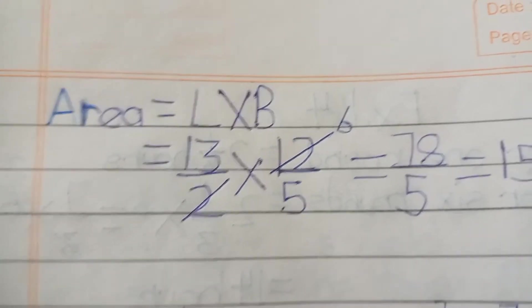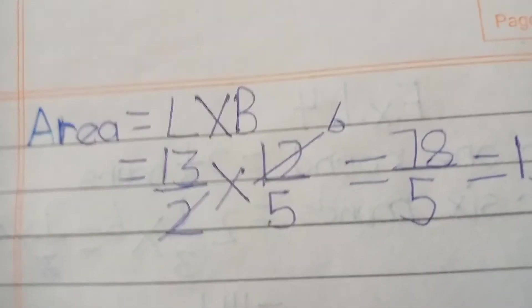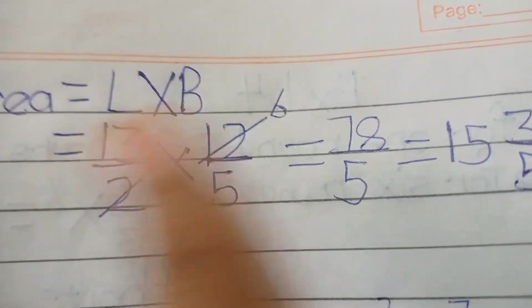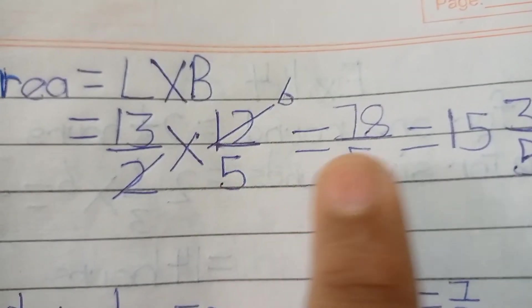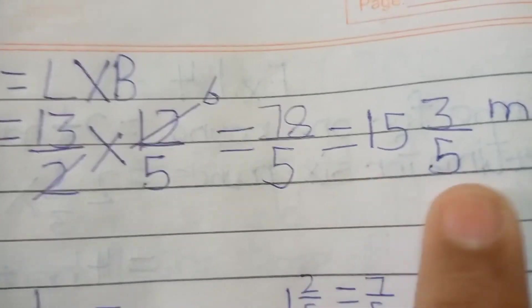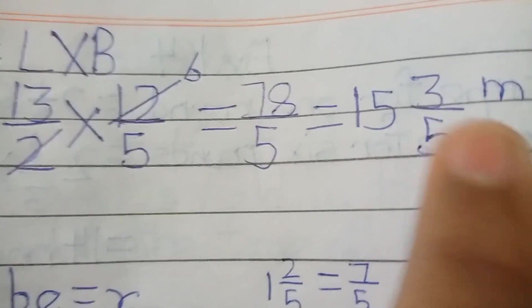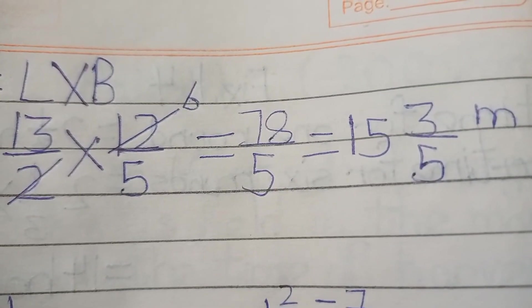Area find karne ka formula hai length into breadth. So dekho, iske liye ho jayega 13 over 2 into 12 over 5. 12, 2 ke saath kat ho jayega, 6 saath hoga. 13 into 6 is 78 over 5 hai, 78 over 5. Isko agar hum change karein mixed fraction mein, so yeh ban jayega 15 whole 3 over 5.